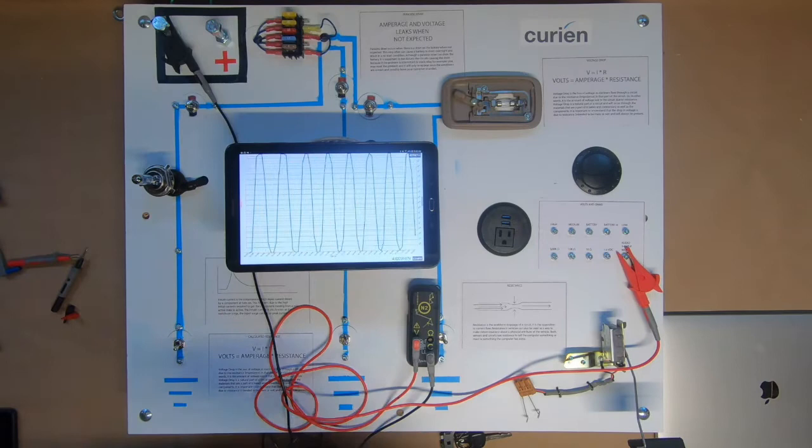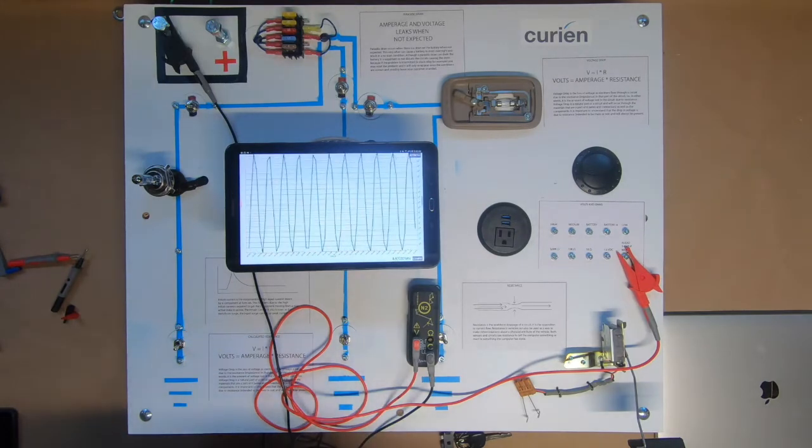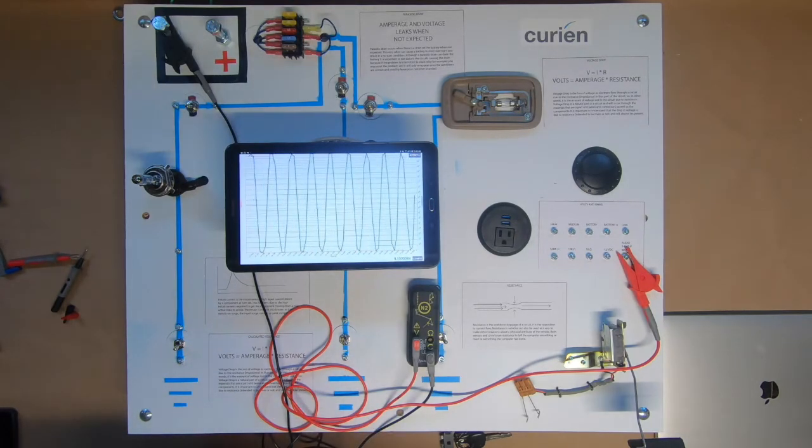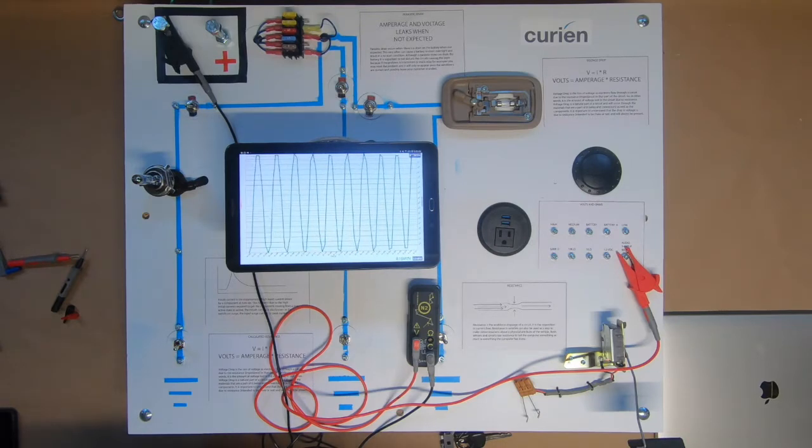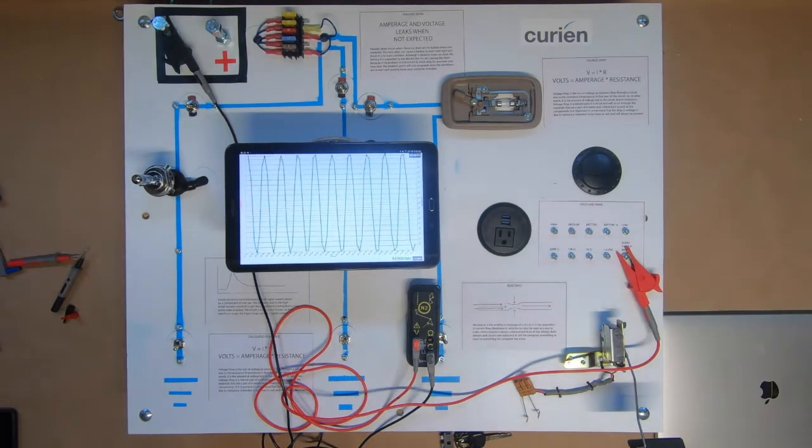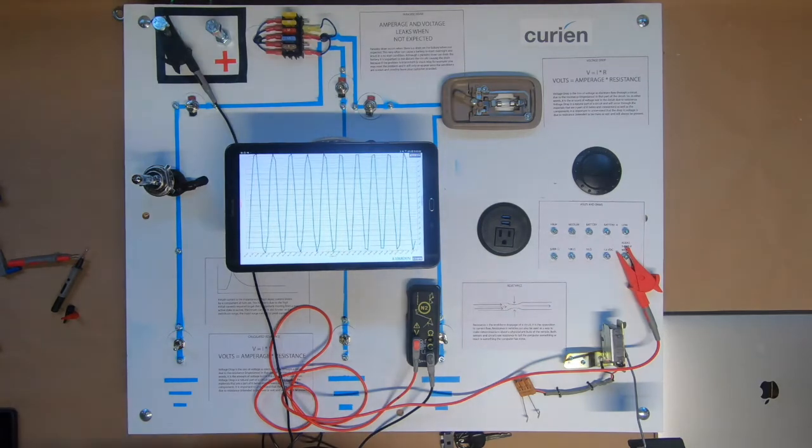Now we did turn on buffer mode, which is the big difference, and I want to talk to you a moment here about buffer mode. Buffer mode is the actual raw live reading coming through the N2. It is the non-calculated data.